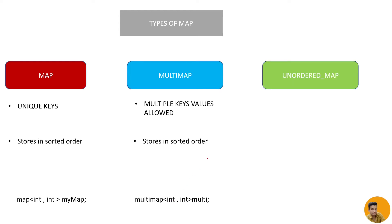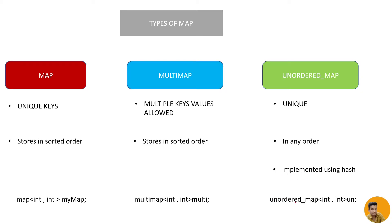Then comes the unordered map. It is the same as the regular map where unique keys are allowed, but it is stored in any order. It is implemented using hashing. This is how we create the unordered map.